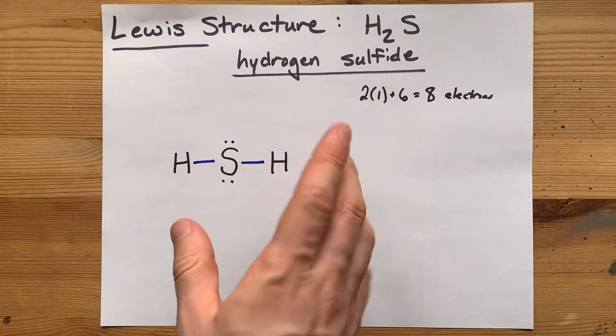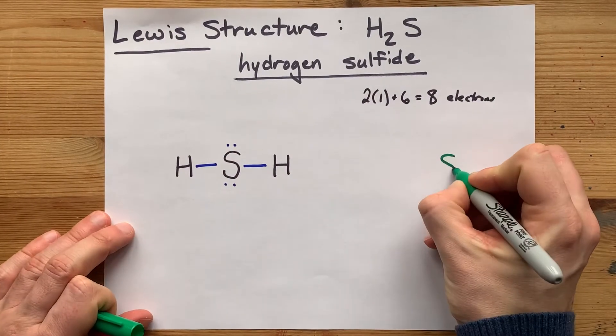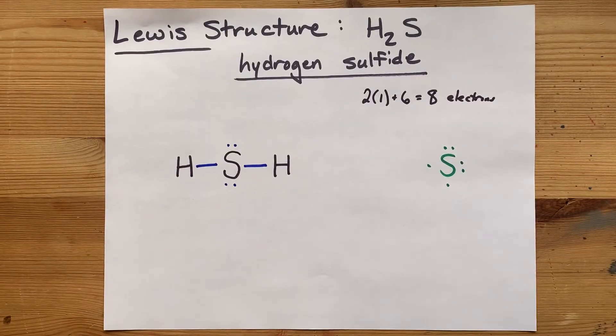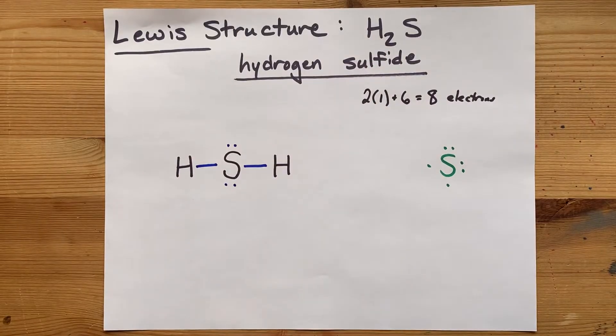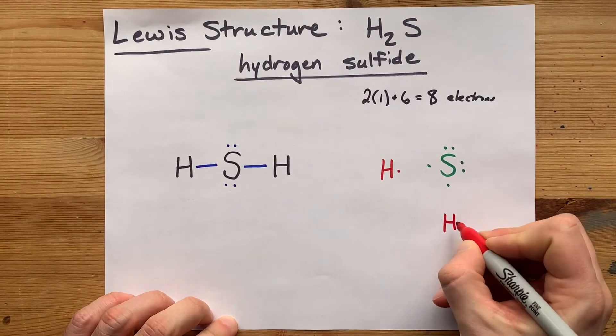This is the Lewis structure for hydrogen sulfide. If you'd like to see that happen a different way, I want you to draw sulfur with six valence electrons, and then draw yourself two hydrogens with one valence electron each.